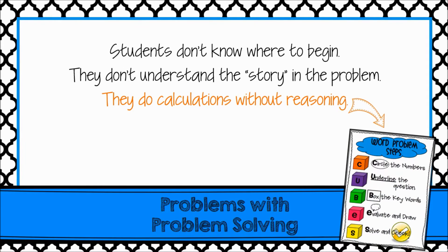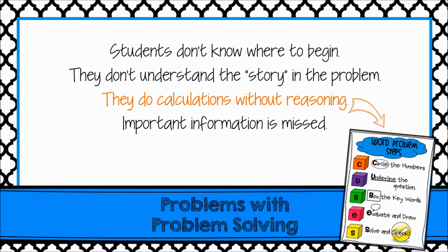Students do calculations without reasoning. Many of the strategies students are taught do not focus on reasoning. For example, the CUBES strategy asks students to circle numbers, underline the question, and box the keywords. All of these steps can be done without even reading and making sense of the situation. Important information is missed. If students are following a prescribed list of steps like CUBES, they often miss important details — for example, details that contain number words rather than numerals.